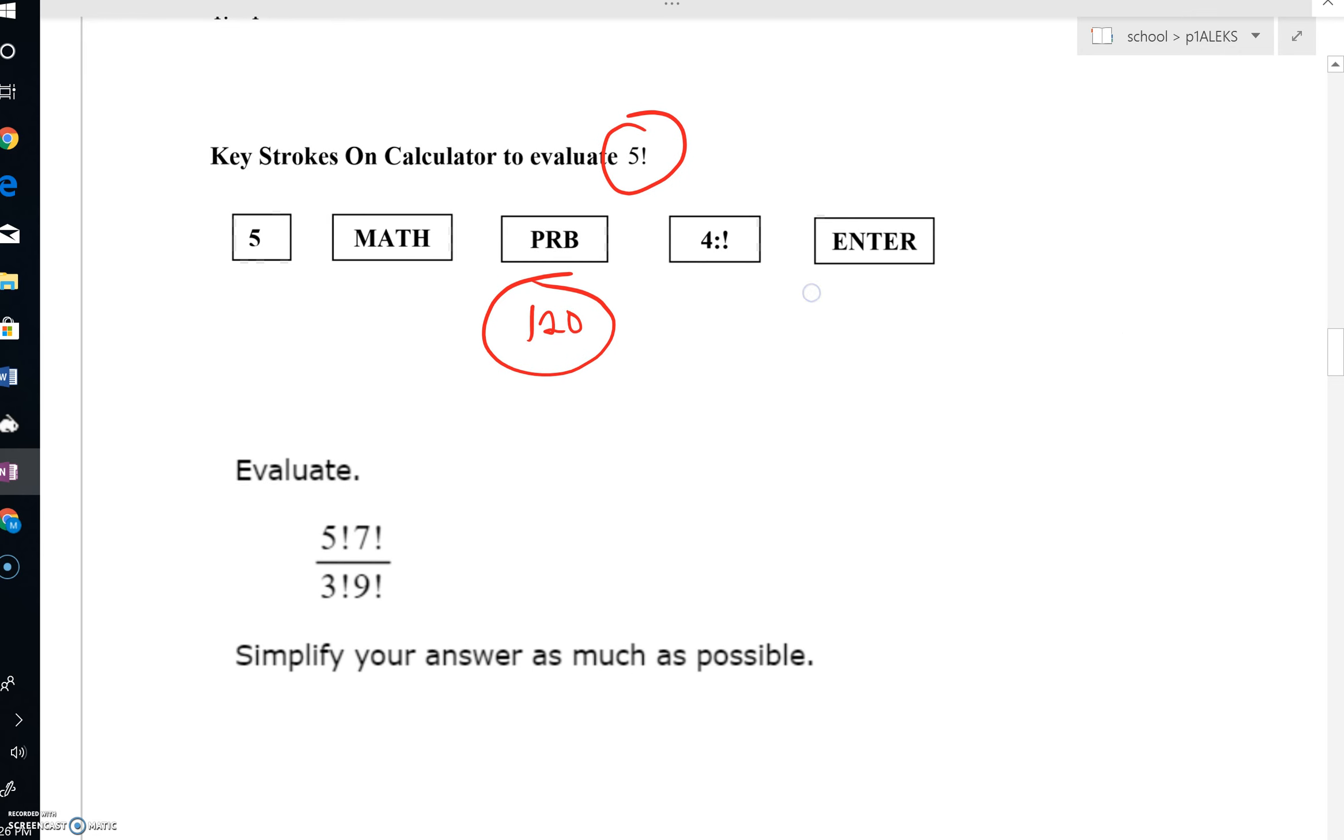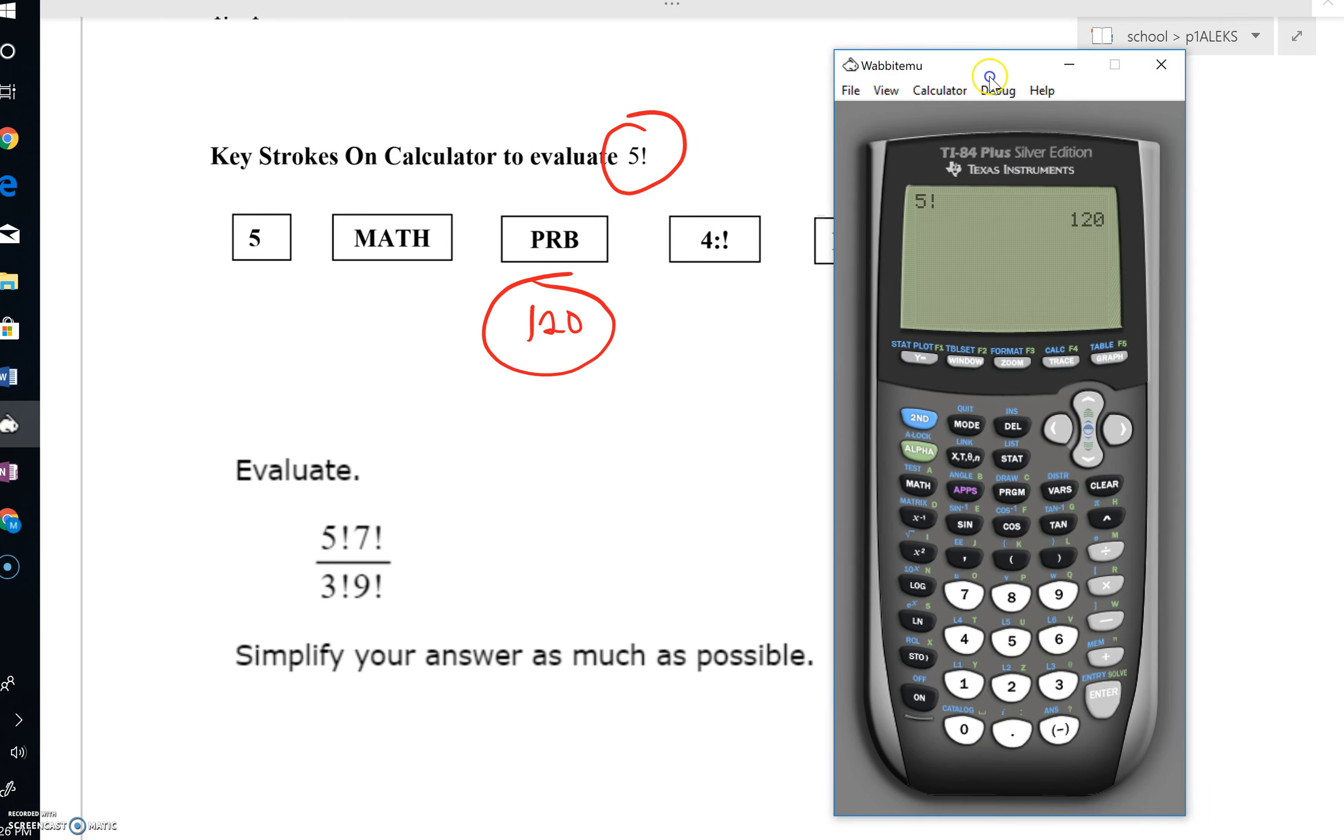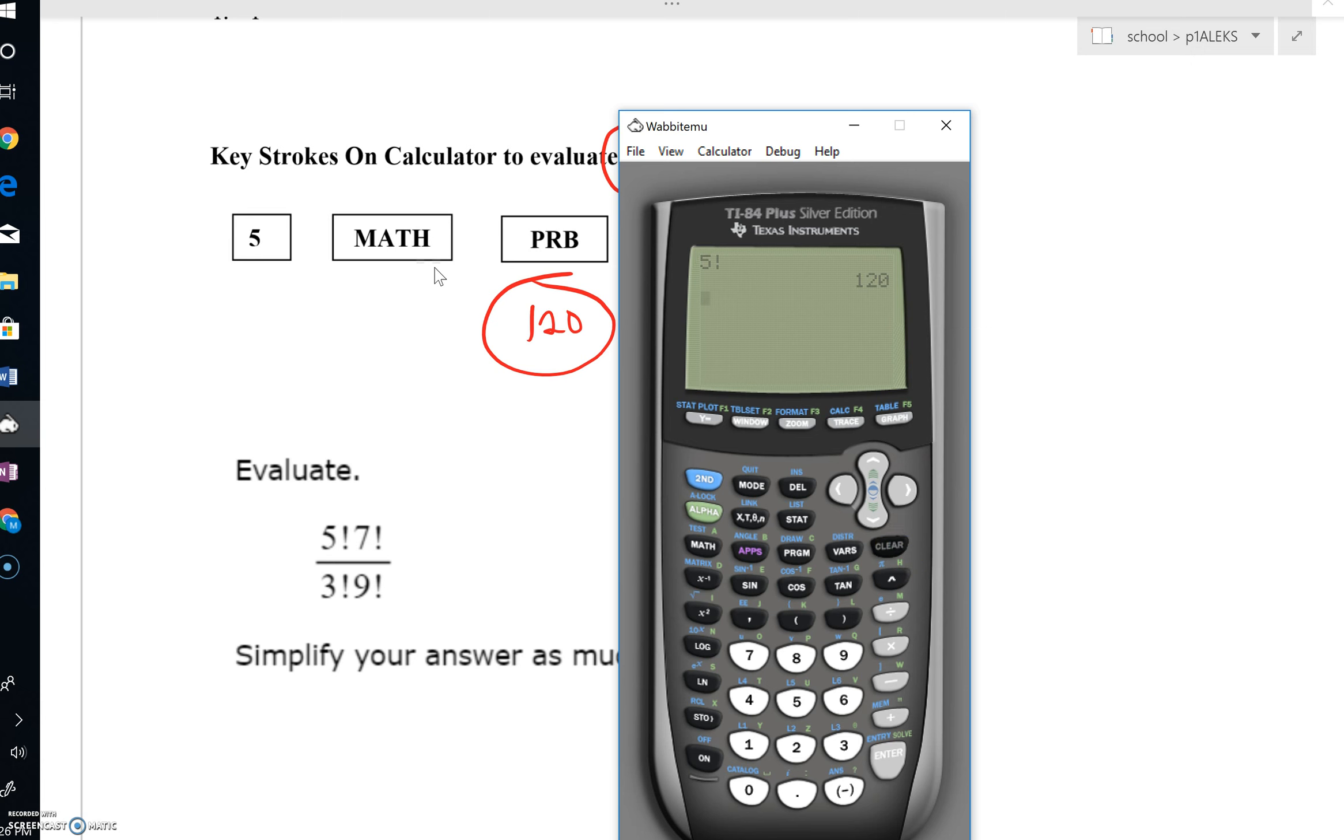Now, Alex is going to give you a number of problems just like this. Five factorial times seven factorial all over three factorial, nine factorial. Well, with the calculator, this becomes really rather simple.